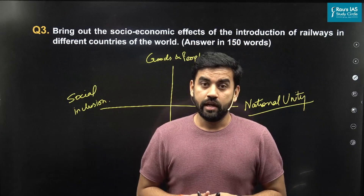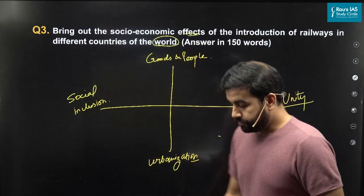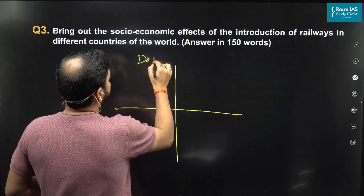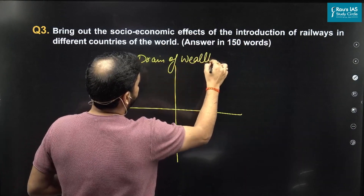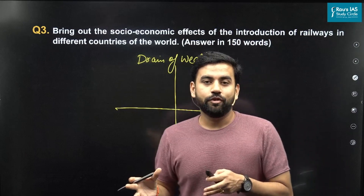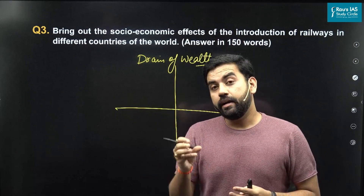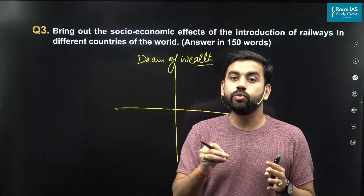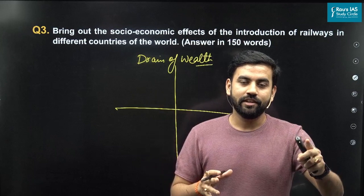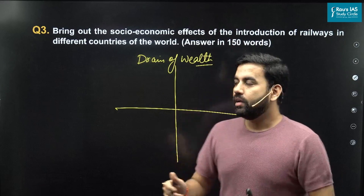Now let's talk about the negative effects of the introduction of railways across countries. The first is that the development of railways called for the drain of wealth. This is something propounded by the moderate leader Dadabhai Naoroji. He said that the purpose for which railways were created was not actually to benefit India or any other colonized country. The benefit was to provide support to foreign traders, who were able to export raw materials easily and import finished goods from their home country easily — that is how there was a drain of wealth.